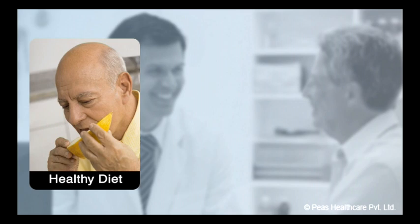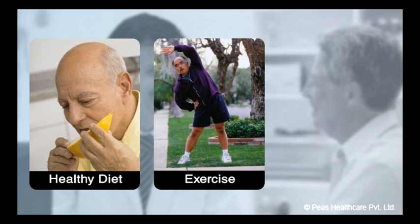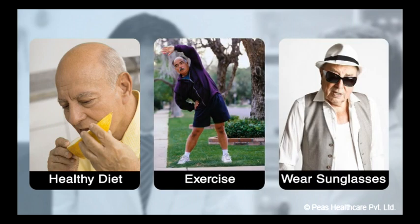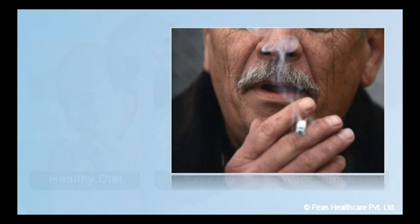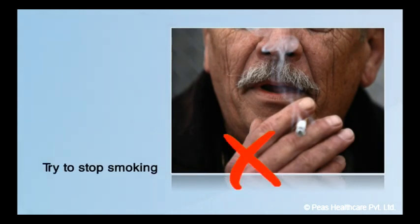Currently, the best way to protect your eyes from developing early macular degeneration is to eat a healthy diet, exercise and wear sunglasses that protect your eyes from the sun's harmful UV rays. If you smoke, try to stop as smoking is a risk factor for many illnesses, including ARMD.